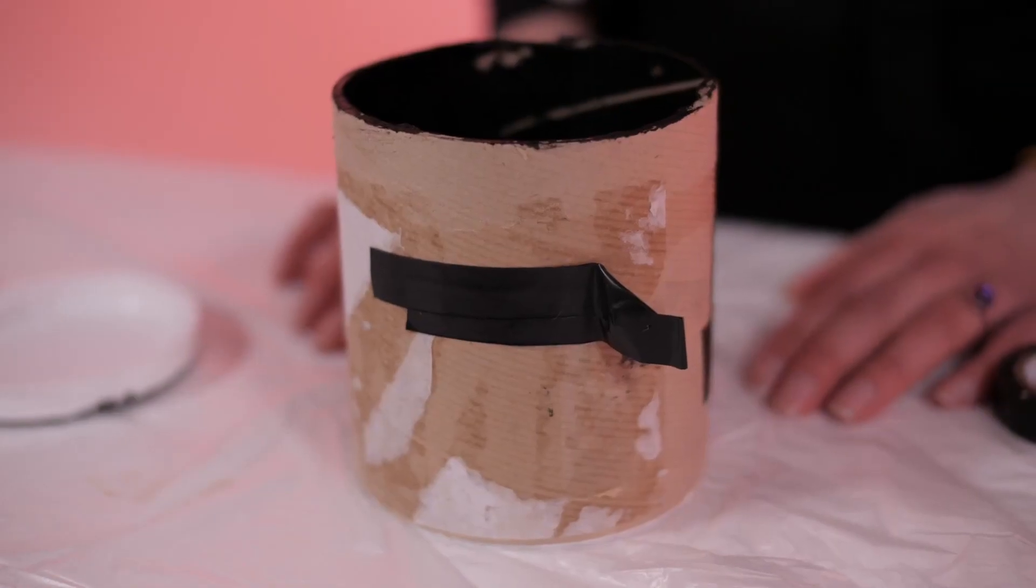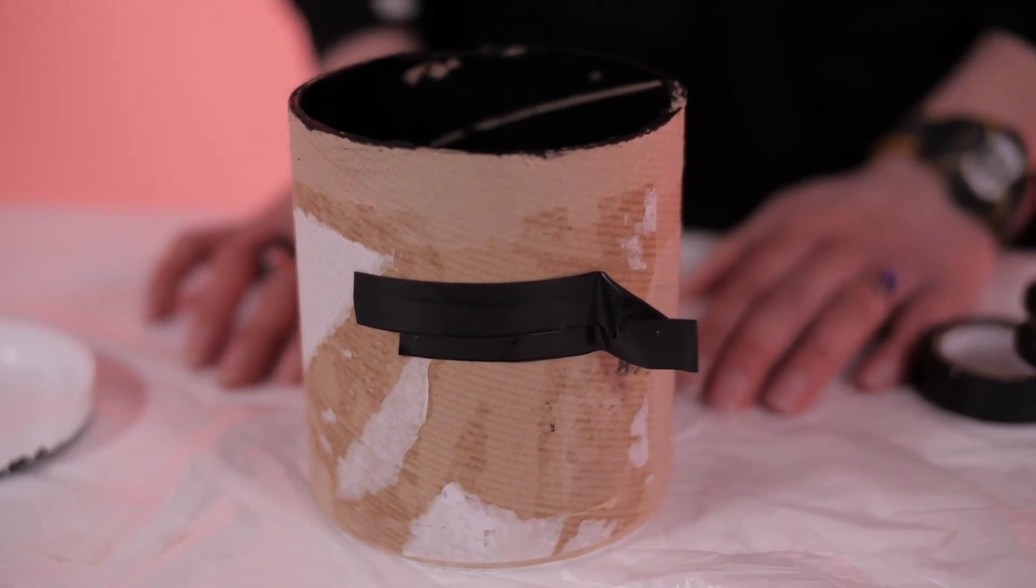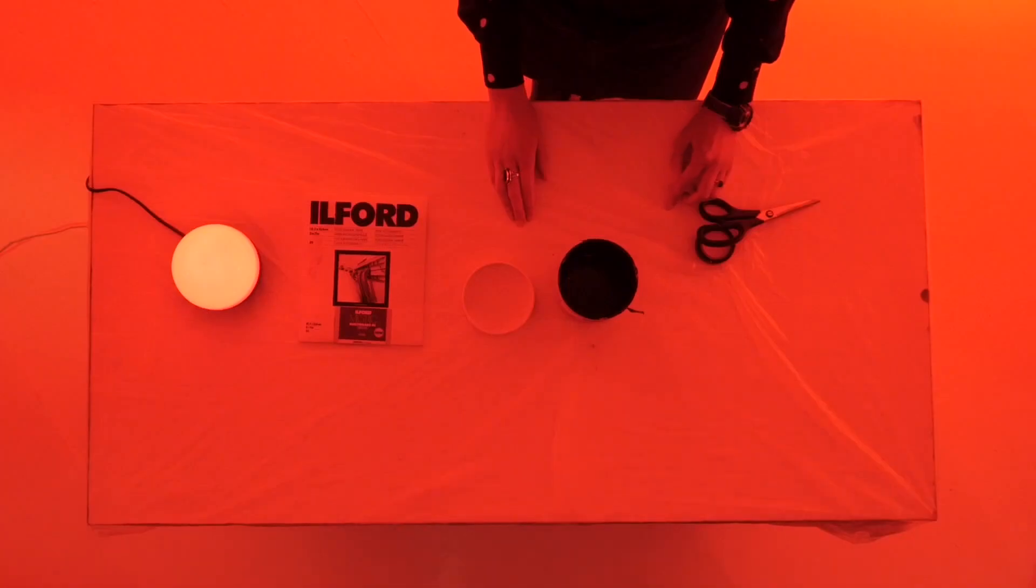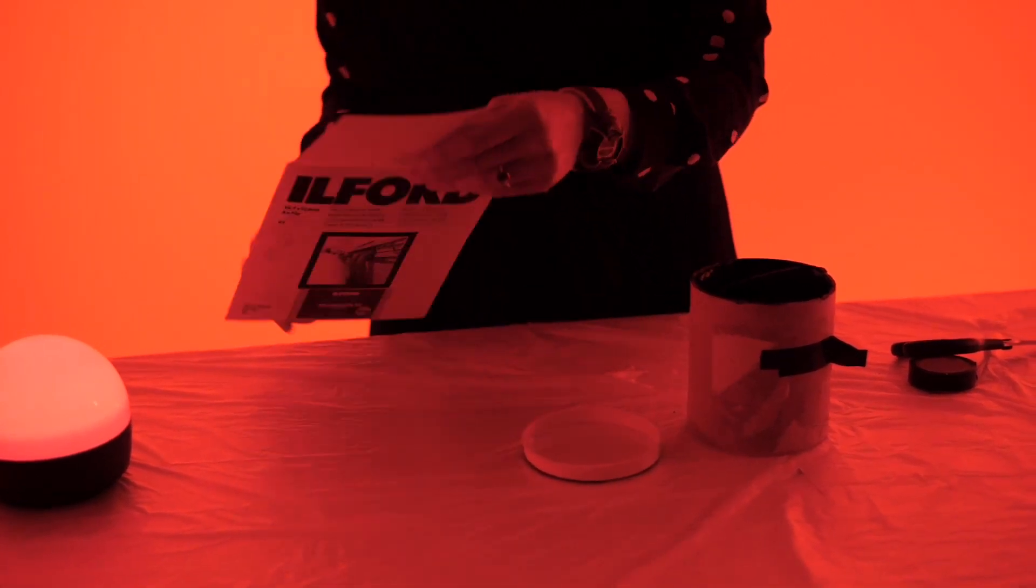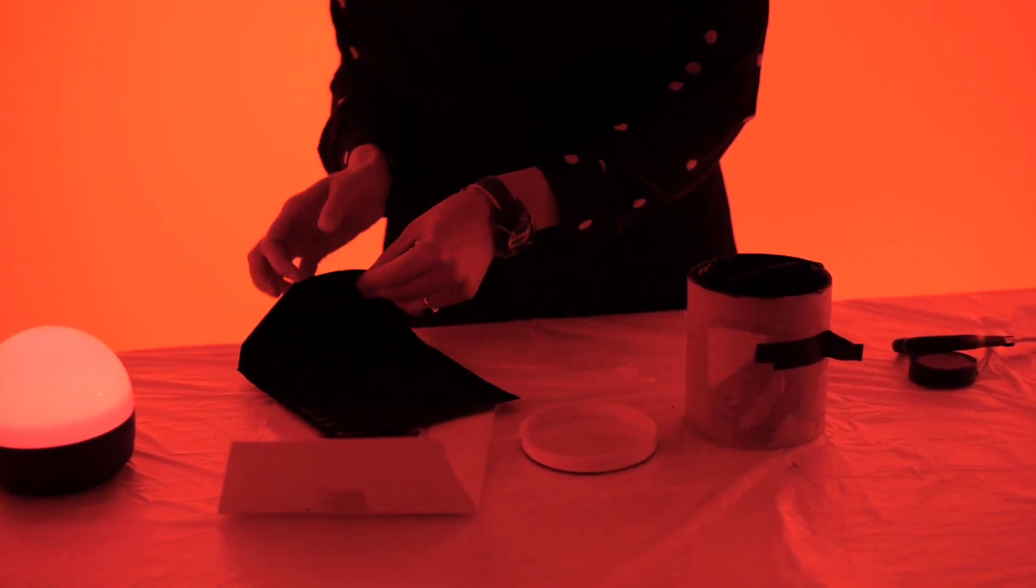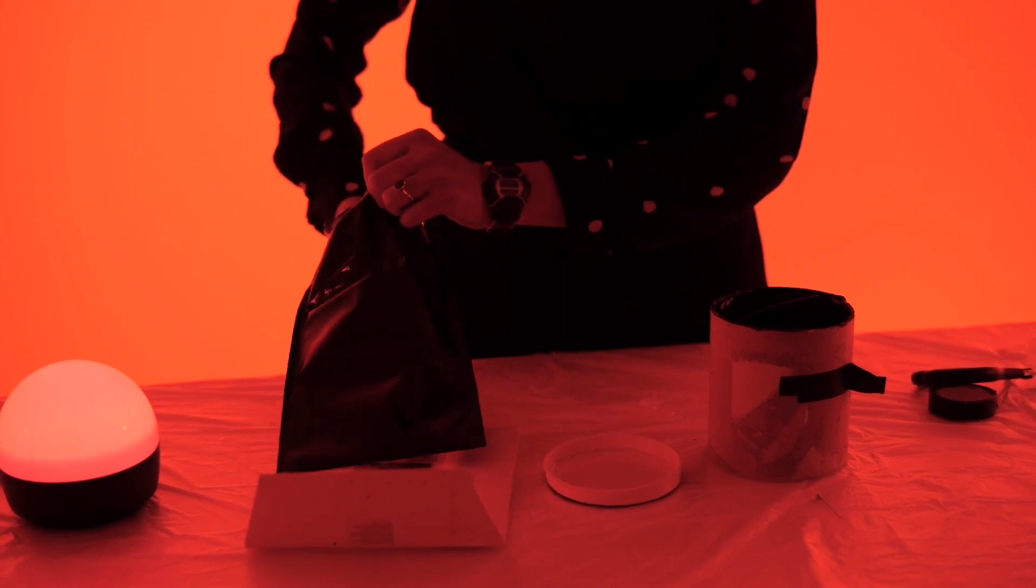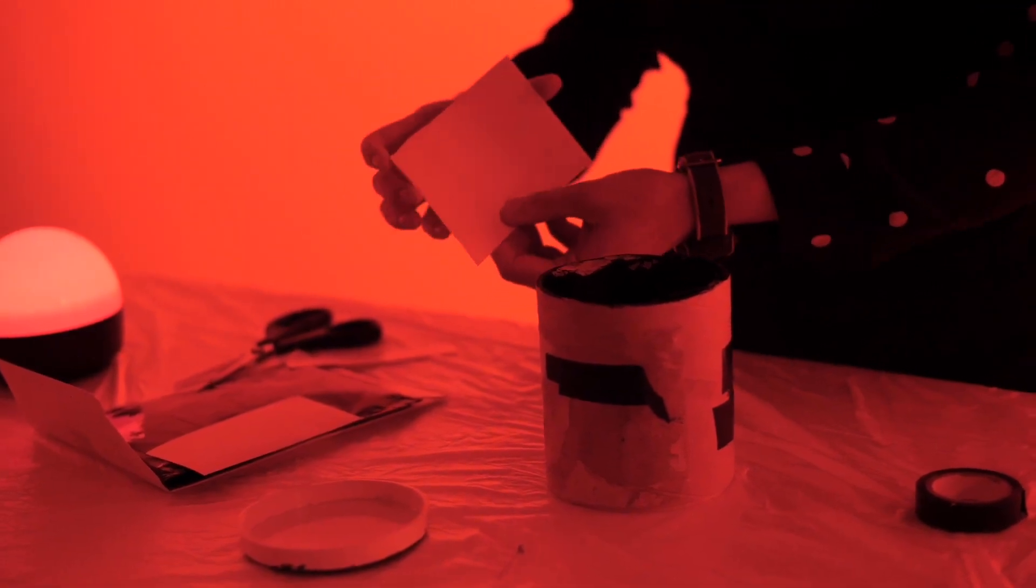So we are now ready to load the pinhole camera with photographic paper. To load your camera you will need to either use a changing bag or use a darkroom. So I am now going to put my photographic paper into the camera. I am using Ilford multigrade resin coated paper for this camera. You should cut up the photographic paper to fit exactly at the back of your pinhole camera and you should make sure that the shiny emulsion side of the paper is facing the pinhole.